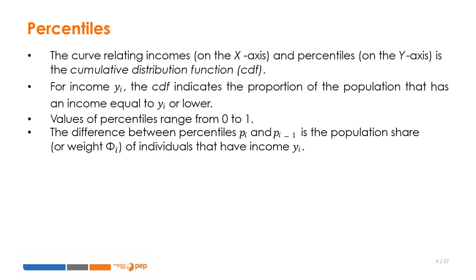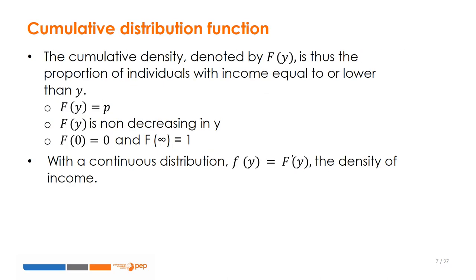It is now useful to relate individual incomes with the percentiles that we have just introduced. This is done through the cumulative distribution function. The cumulative density corresponds to the percentile p — that is, the proportion of people enjoying a level of income y or lower. In a continuous distribution, as is normally the case with income, the first derivative of the CDF is the density function.